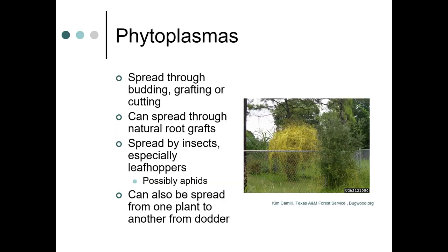Phytoplasmas can spread through budding, grafting, or cutting. They can spread through natural root grafts. They can also be spread by insects, especially leafhoppers, and sometimes aphids. They can also spread from one plant to another if it's covered with dodder.